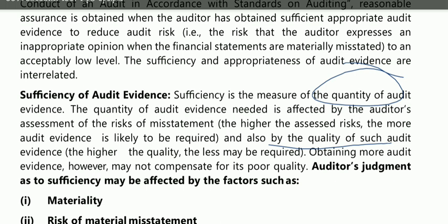For example, the balance sheet is the mirror of the organization — so if you use it as audit evidence, it will be high quality. And if the quality is high, then even less quantity will be sufficient. But if the quality is low, you will need more evidence.